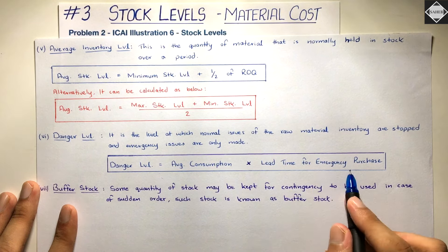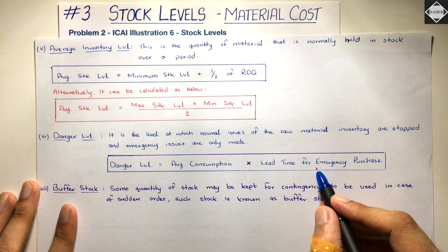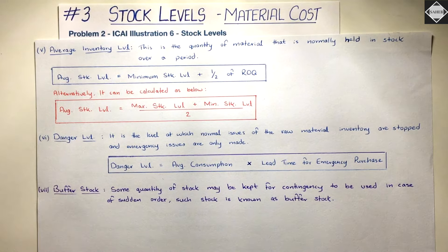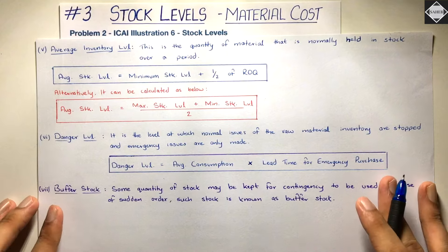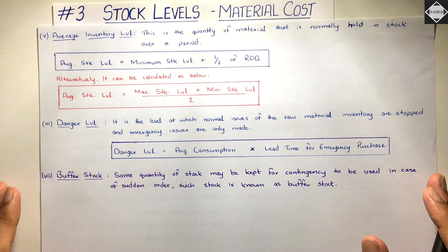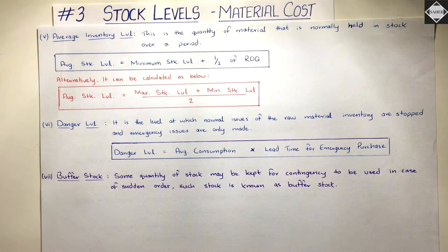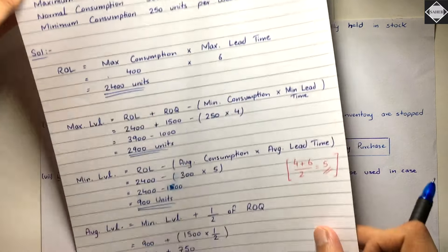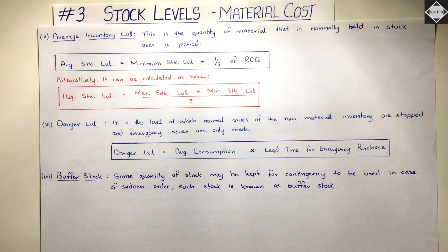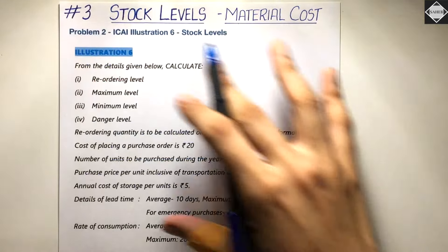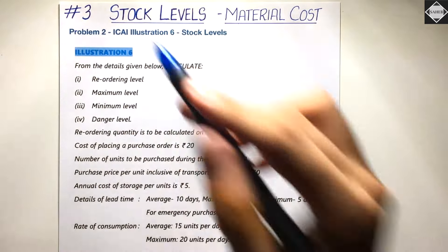If you're purchasing on emergency you have to pay something extra, then they will deliver the inventory very soon. There is no formula for buffer stock — it's just a theoretical concept. That was a quick recap. In the second video we solved a simple problem of stock levels. Now let's get back to the third video and solve the question from the ICAI study material.